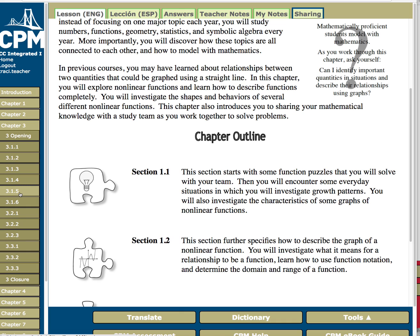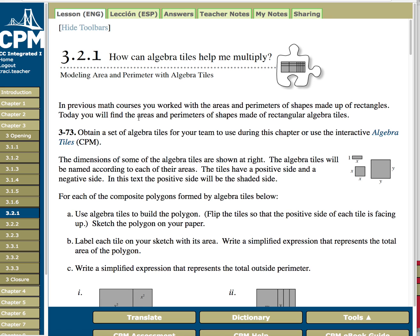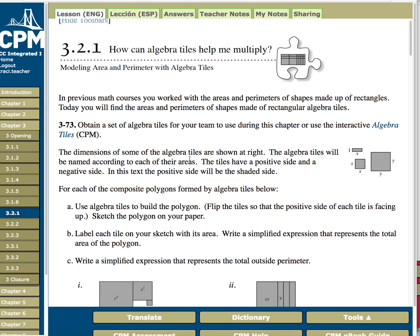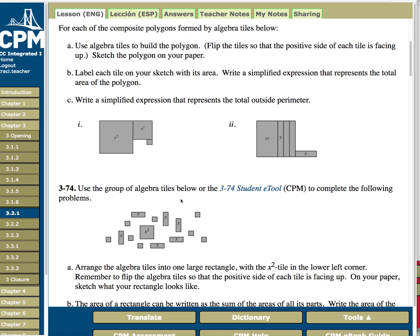Section 2, lesson 1. So 3.2.1. And here I can see kind of the main idea, some problems here, and then I can also see that inside I have some e-tools. Anytime there's an e-tool, there's a link there.